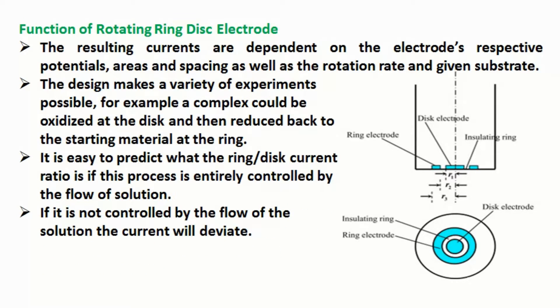The resulting currents are dependent on the electrode's respective potentials, areas and spacing as well as the rotation rate and given substrate. The design makes a variety of experiments possible, for example a complex could be oxidized at the disc and then reduced back to the starting material at the ring. It is easy to predict what the ring-disc current ratio is if this process is entirely controlled by the flow of solution. If it is not controlled by the flow of the solution the current will deviate.